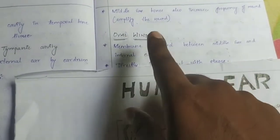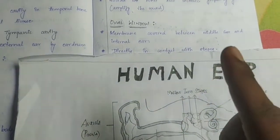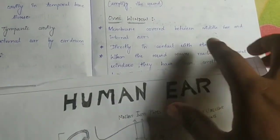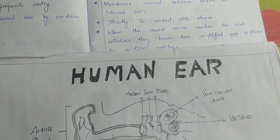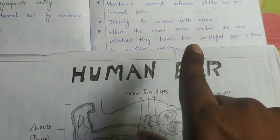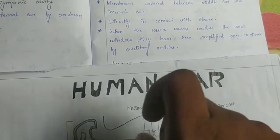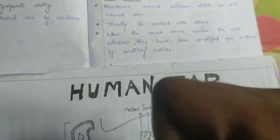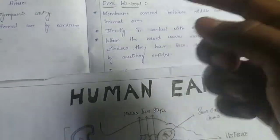Next is the oval window. The oval window is a membrane-covered opening between the middle ear and the inner ear. It is directly in contact with the stapes. When the sound waves reach the oval window, they have been amplified over 10 times by the auditory ossicles.